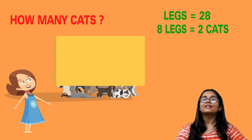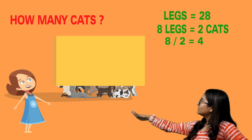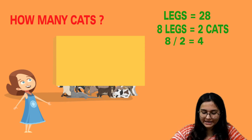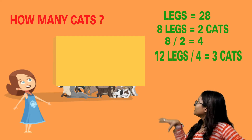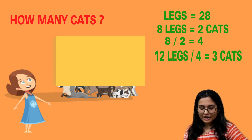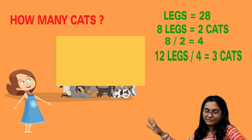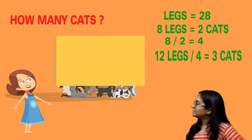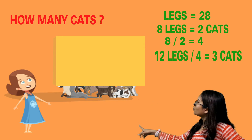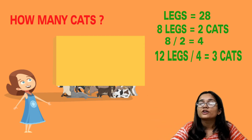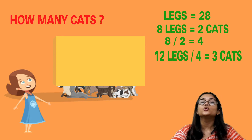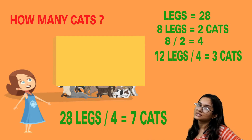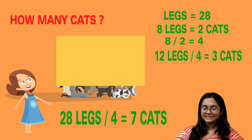Now, 1 cat has 4 legs. If there are 4 legs, there is 1 cat; 8 legs means 2 cats; 12 legs means 3 cats; 16 legs means 4 cats. So for 28 legs, we divide by 4. We know 4 5s are 20, 4 6s are 24, and 4 7s are 28. So 28 legs means 7 cats in all.